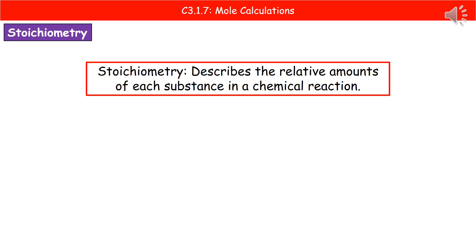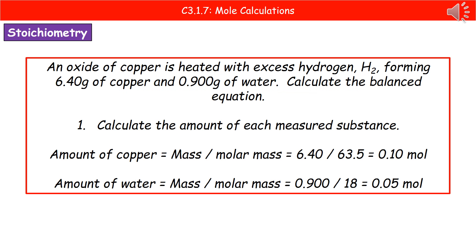The last thing we're going to look at is stoichiometry. When we're referring to the stoichiometry, we're describing the relative amounts of each substance that are in a chemical reaction. The kind of question that we could be asked on stoichiometry is shown in the box here. An oxide of copper is heated with excess hydrogen, H2, forming 6.40 grams of copper and 0.900 grams of water. Calculate the balanced equation.